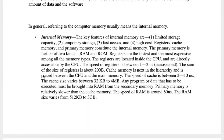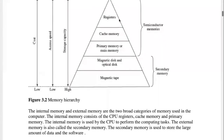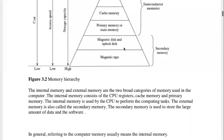The first thing is the internal memory. The internal memory means that we have the CPU directly attached to it. This type of memory is what we call the primary memory.